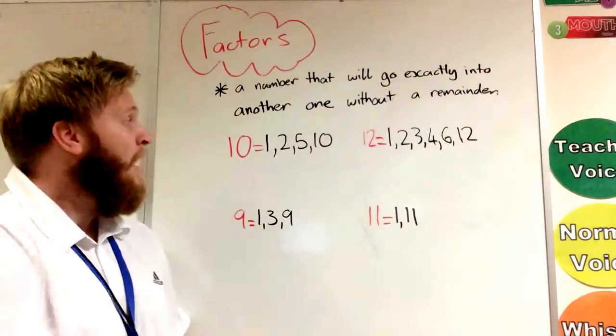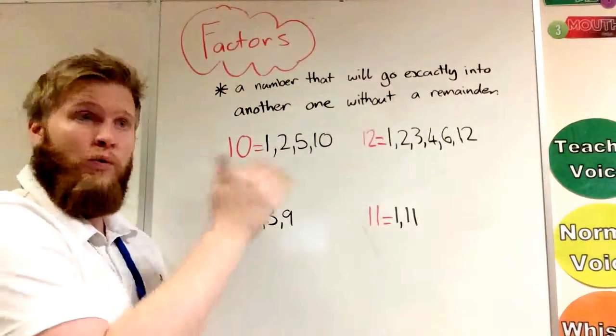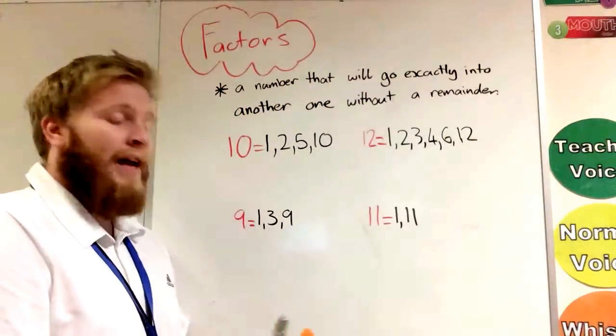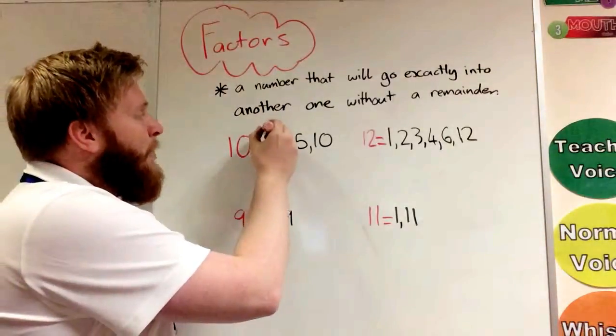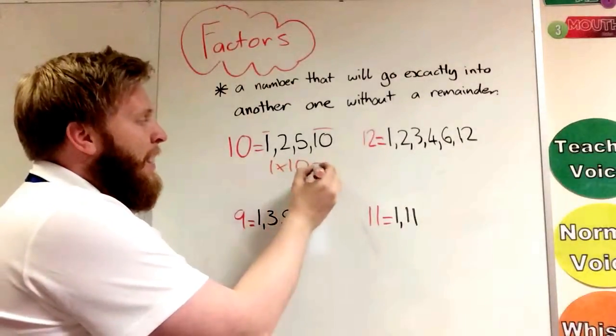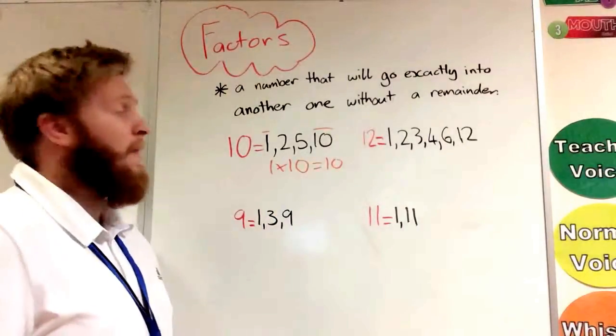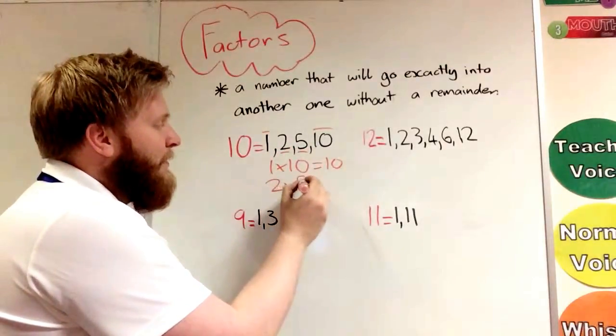So that's what a factor is. Now the easiest way to find the factors of a number is to work up from 1, and they will always come in what we call factor pairs. So we have 1 here and 10, because 1 times 10 is 10. Then we've got another factor pair, 2 and 5, because 2 times 5